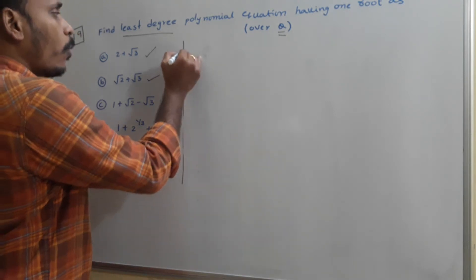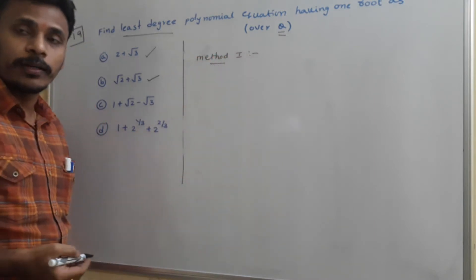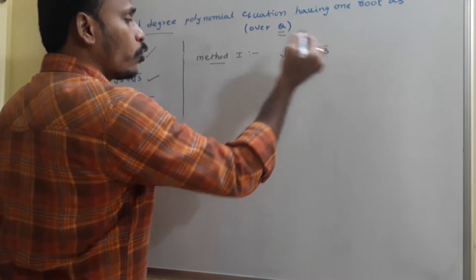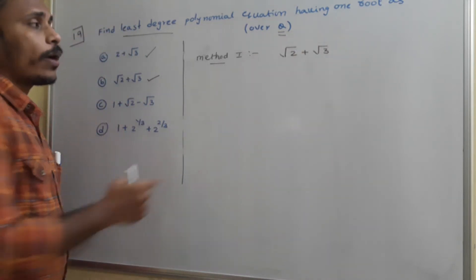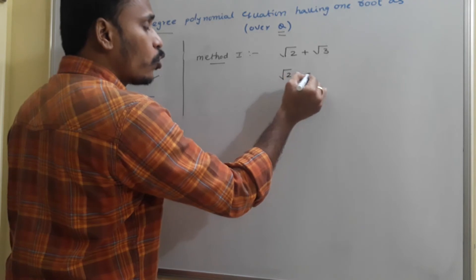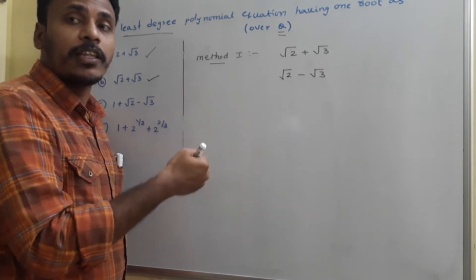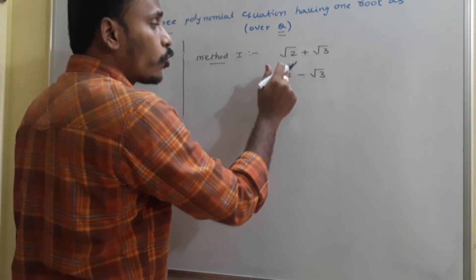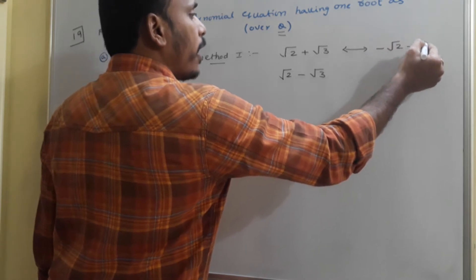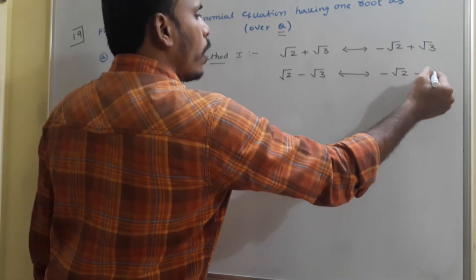If we try to solve using Method 1, since the polynomial is over rational numbers and one root is root 2 plus root 3, then to eliminate the irrational numbers from the coefficients we consider another root: root 2 minus root 3. But these two are not enough for a polynomial over rationals, because root 2 is also irrational. That's why, corresponding to root 2 plus root 3, we consider minus root 2 plus root 3; and corresponding to root 2 minus root 3, another root is minus root 2 minus root 3.